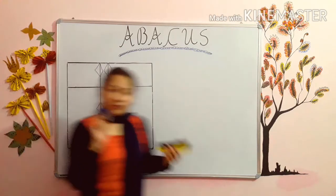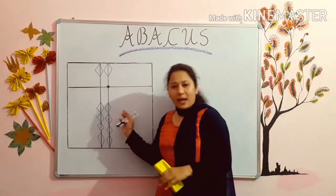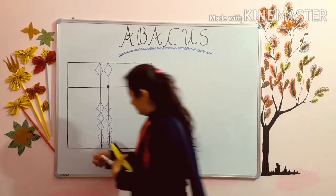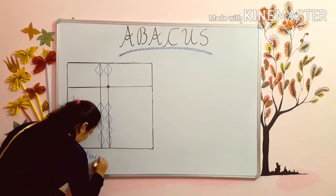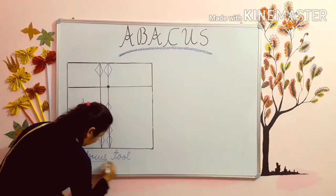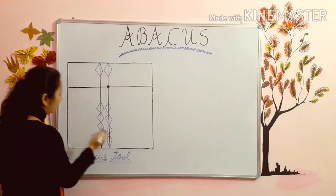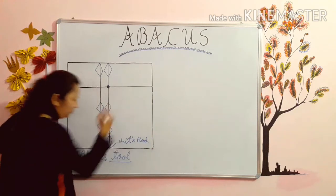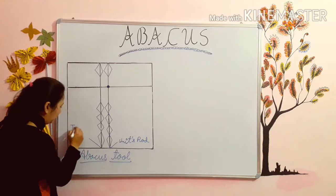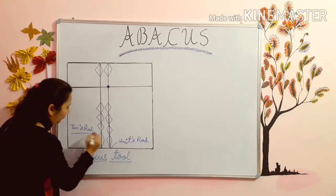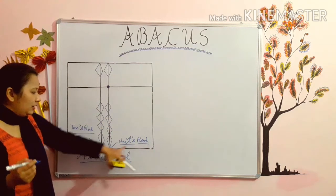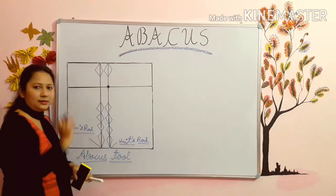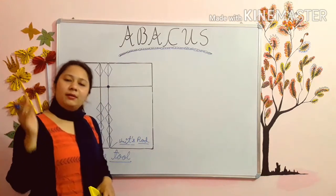In my previous video, I have also explained how to put these beads in the abacus tool. So again I am repeating for those kids who have missed my previous video — please watch that video first, then watch this video. It will be more easier to understand today's topic. Before starting, I want to tell you some abacus tips. I have drawn the abacus tool for you. This rod is called the Units rod, and this rod is called the Tens rod. The middle rod is called the Units rod.